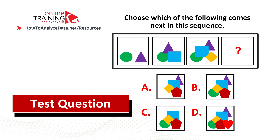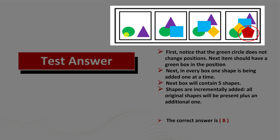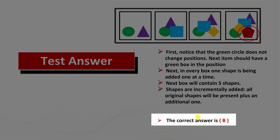Did you figure out the answer? Let's continue to see how we can solve this challenge together. When we look at the original items presented in the sequence, you see that a green circle is presented in every box. Another pattern is that items are added incrementally. The first square contains two objects, one of which is a green circle. The second square contains a green circle, a triangle, and a square. In the third box, all original items are present and we have an additional yellow diamond. So the item we pick should have a green circle in the bottom left corner, should have five items, and should contain all original items from the first three squares. This leads us to the correct answer, choice B.